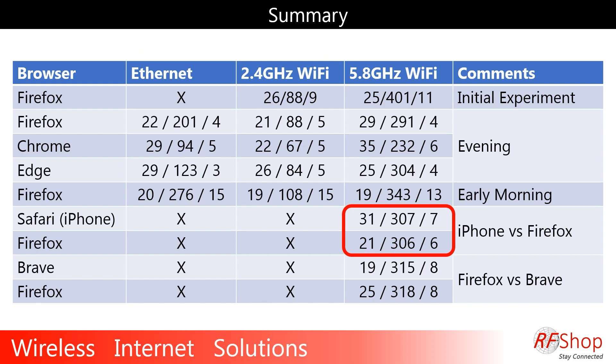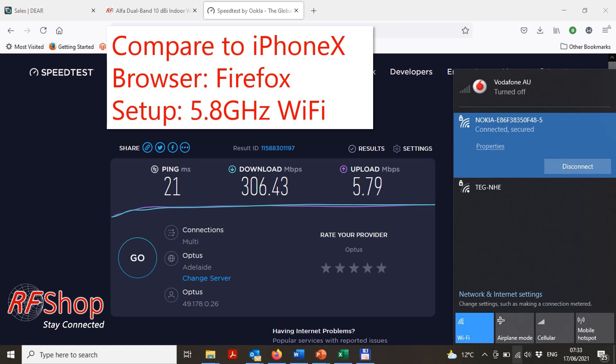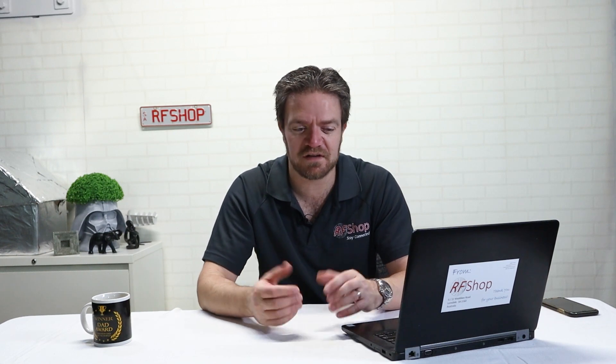I then compared Safari on my iPhone against Firefox on my laptop — just those two. The results were very similar. On 5.8 GHz Wi-Fi set on both devices I got comparable speeds, which is consistent and confirms it's the network doing the work, not the specific device.